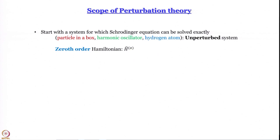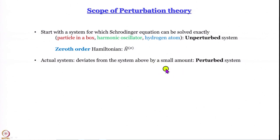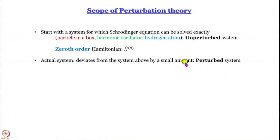We start with an unperturbed system for which we are able to solve the Schrödinger equation exactly. The Hamiltonian for such an unperturbed system is called the zeroth-order Hamiltonian — zero meaning there is no perturbation. We write it as Ĥ⁽⁰⁾. Next, we try to build a description of the actual system by considering a small deviation from this unperturbed system. This word 'small' is very important — perturbation is a small disturbance.